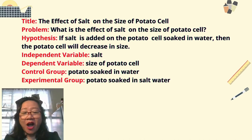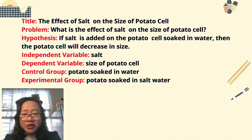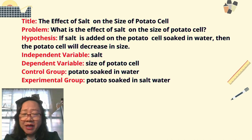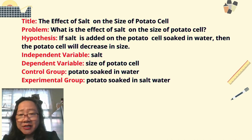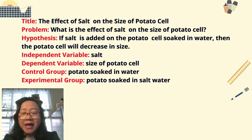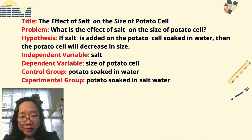Next, identify how many groups you are going to use. Since this is an experimental design, you will be using a control group and an experimental group. The control group is the one that does not receive the treatment of salt — so it is a potato soaked in water. The experimental group is the one with treatment of salt — a potato soaked in salt water.